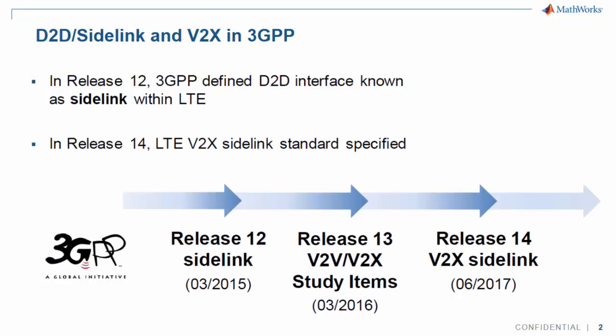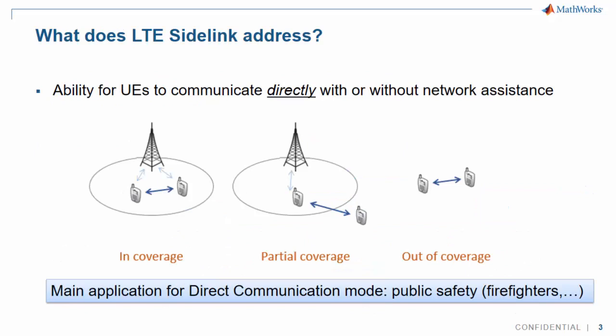In release 12, 3GPP introduced a new device-to-device interface known as Sidelink. V2X came out of follow-up work on Sidelink in release 14. The main idea of Sidelink is to enable UEs to communicate directly. Communication may take place with or without network assistance, meaning Sidelink supports all three scenarios where both UEs are in coverage, or only one or none of them is.